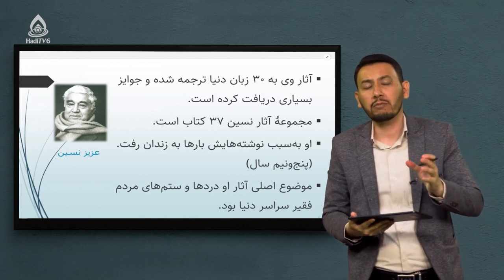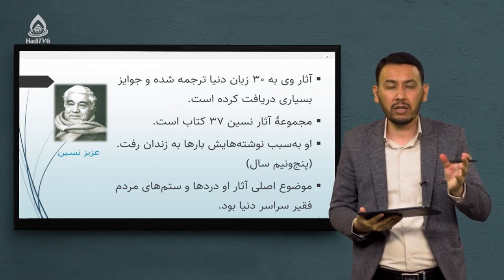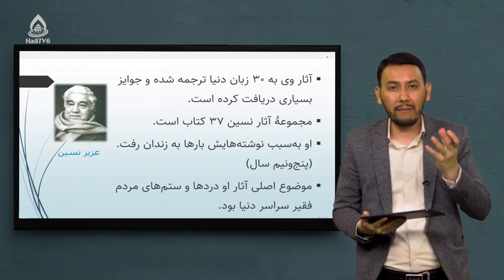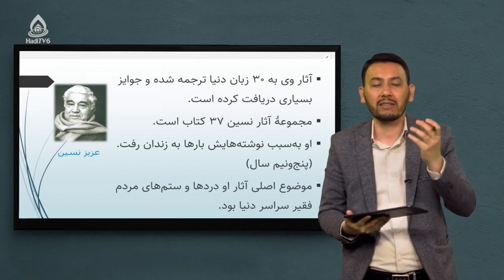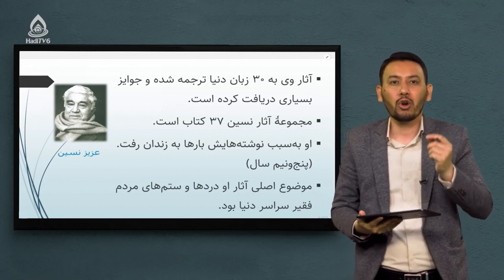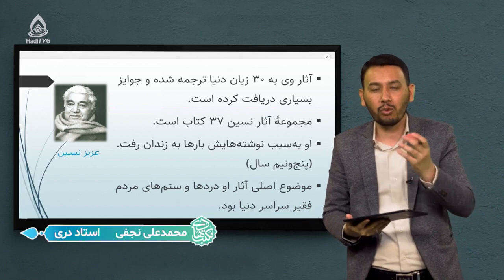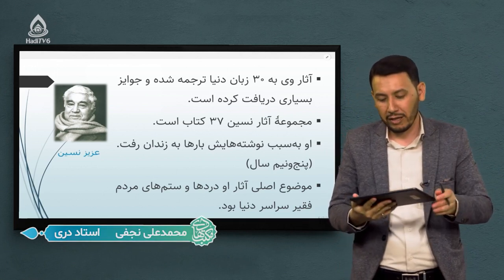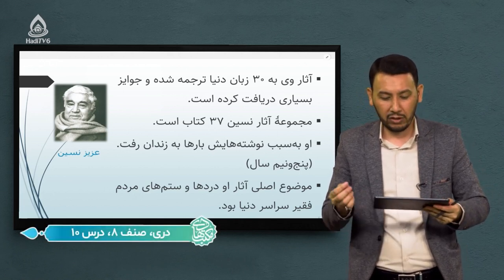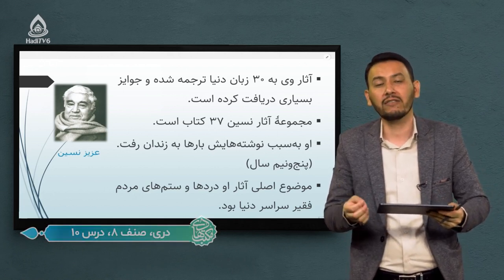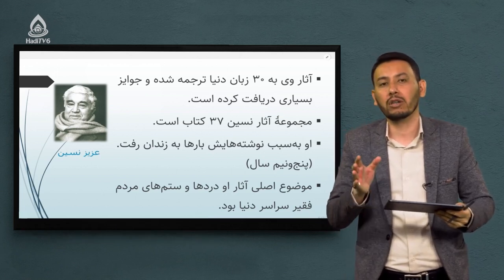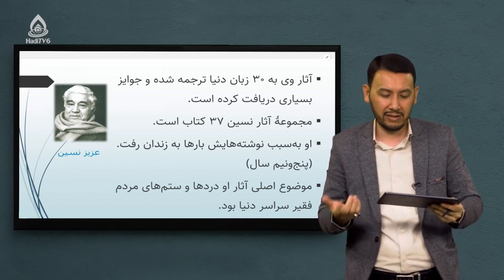از آثار کلی ایشان میتوانیم به «شارلاتان»، «پخمه»، «داماد سرخانه» و آثار بسیار زیاد دیگر اشاره کنیم که همه از موضوع خود کتاب مشخص است که طنز است. مجموع آثار نسین سی و هفت کتاب است که ایشان نوشته و به بسیاری زبان‌ها ترجمه شده و برای خوانندگان در نقاط مختلف دنیا در دسترس است.